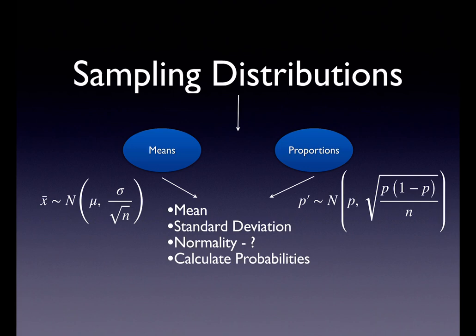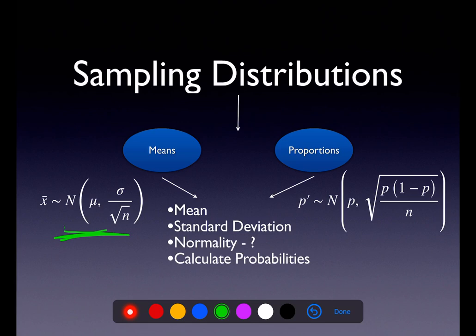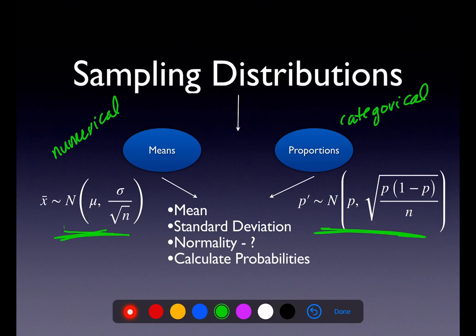Hey, Math 43, welcome to the Chapter 9 Summary. Here we're going to think about how we can extend all that stuff we learned in Chapter 7 about sampling distributions — whether we're in mean land with a numerical variable, or in proportion land with a categorical variable — and thinking about the center, the standard error, how we get normality, what the assumptions are, and how that plays out in hypothesis test land.